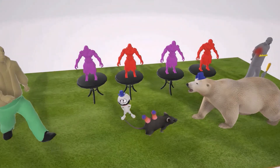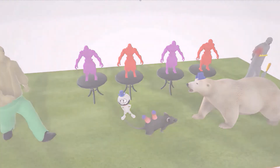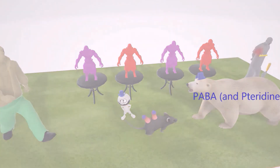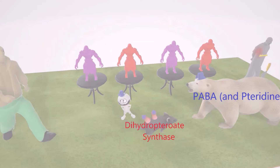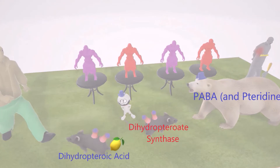Let's depict what normally happens. The polar bear represents PABA. Normally, the enzyme dihydropteroate synthase — represented by the rodent with two hydrants — converts PABA along with pteridine into dihydropteroate acid, represented by the hydrant rodent with a lemon (acid).